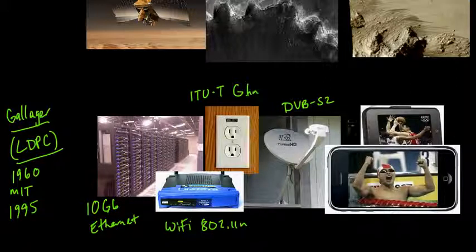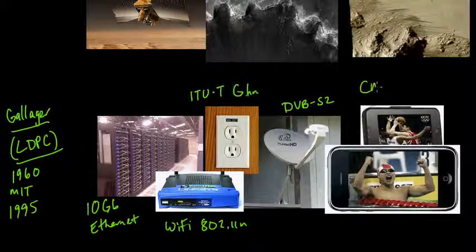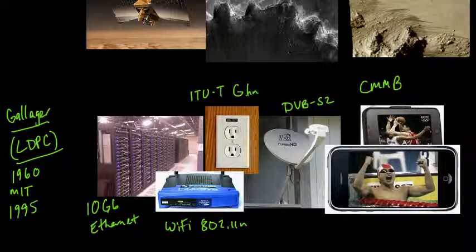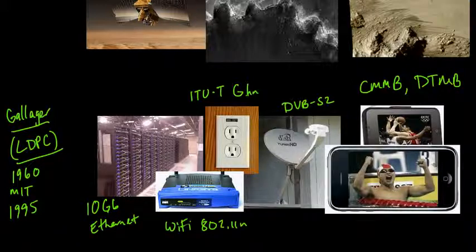Our very last application is standards being used in China. CMMB — China Multimedia Mobile Broadcasting — is used for transmission of video content from satellites to handheld devices, and they use Gallager codes (LDPC codes). Another standard is DTMB for regular televisions, and they also use Gallager codes for HD TV and similar applications.